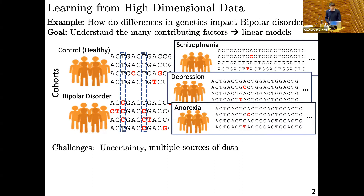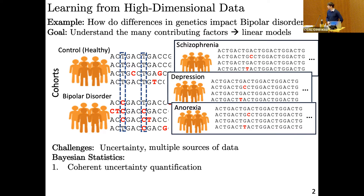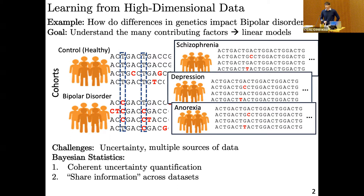A second challenge is that we're often interested in not just one disease, but several. And we have multiple sources of data that we'd like to combine so that we can learn about all of these different things. In principle, Bayesian statistics can provide a solution to these problems. It provides the ability to have coherent quantification of our uncertainty and to reduce that uncertainty by combining multiple groups of data if we know, as we do in this case, that there may be similarities in the underlying factors in these different data sets.